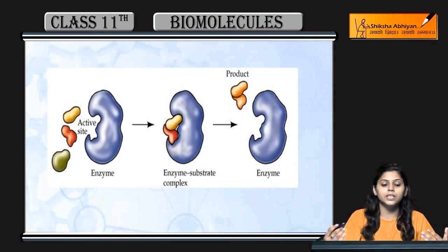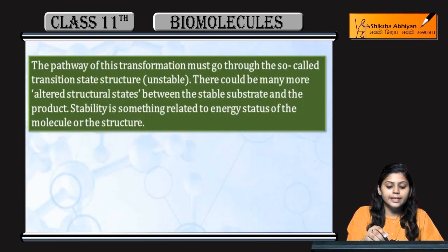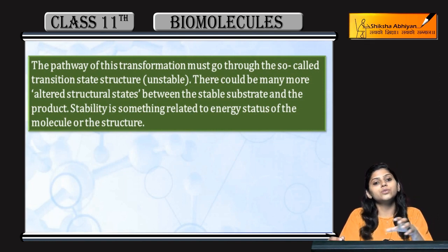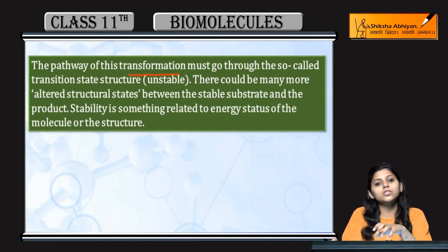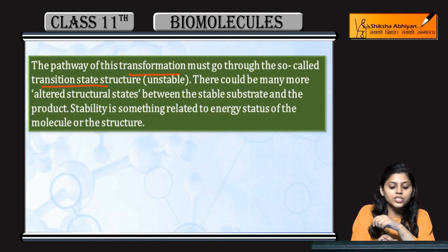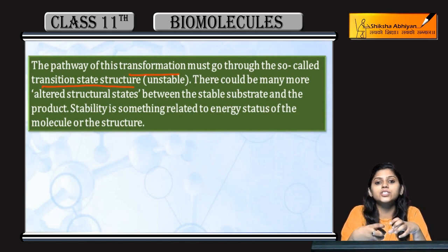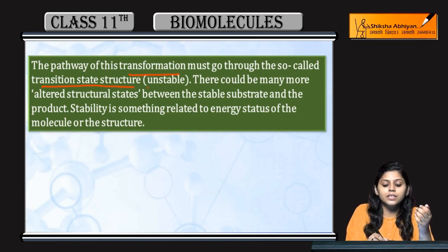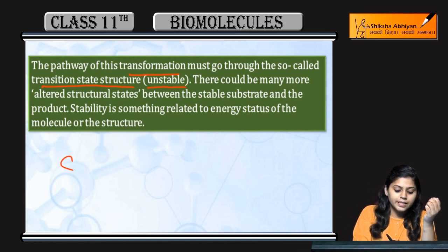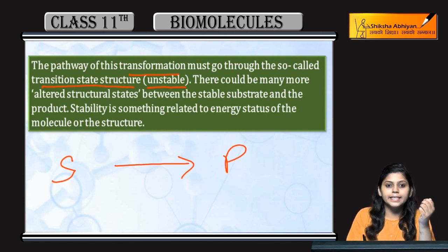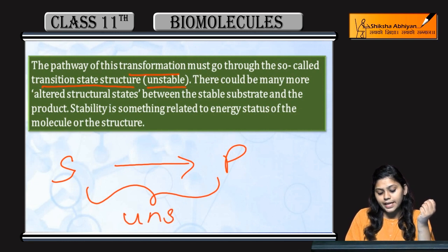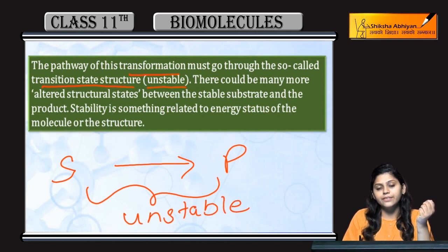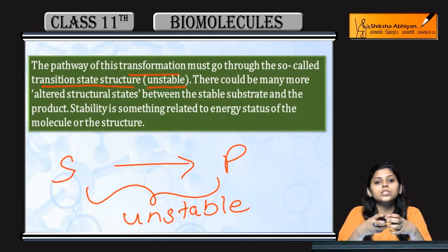When structural change occurs and product forms, the next pathway of transformation must go through transition state structure. Transition state structure is an unstable state. Between substrate and product formation, whatever state exists is an unstable state. This unstable state is called the transition state because many shapes of the enzyme-substrate complex change so that a particular product can be made from a particular substrate.